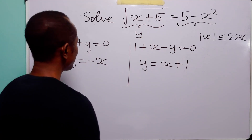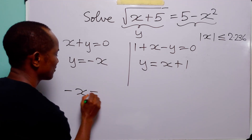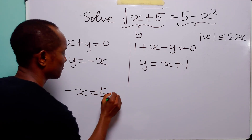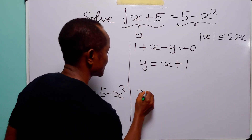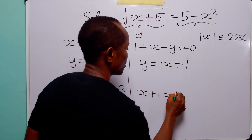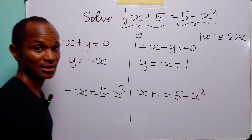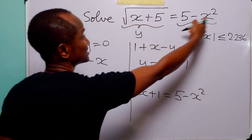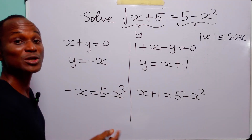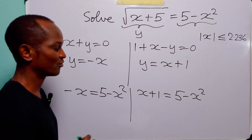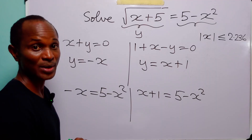Recalling that y = 5 - x², we substitute back into each case. Either -x = 5 - x², or x + 1 = 5 - x². This breaks the original equation into two separate quadratic equations, which we can easily solve.